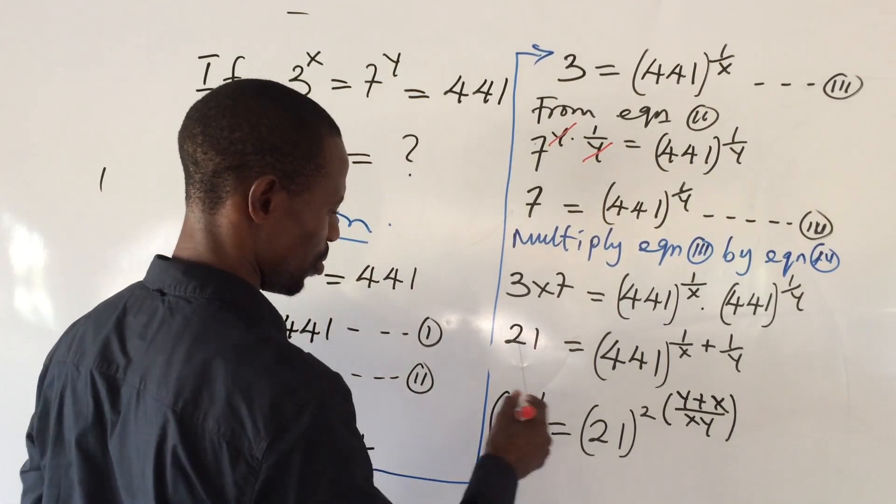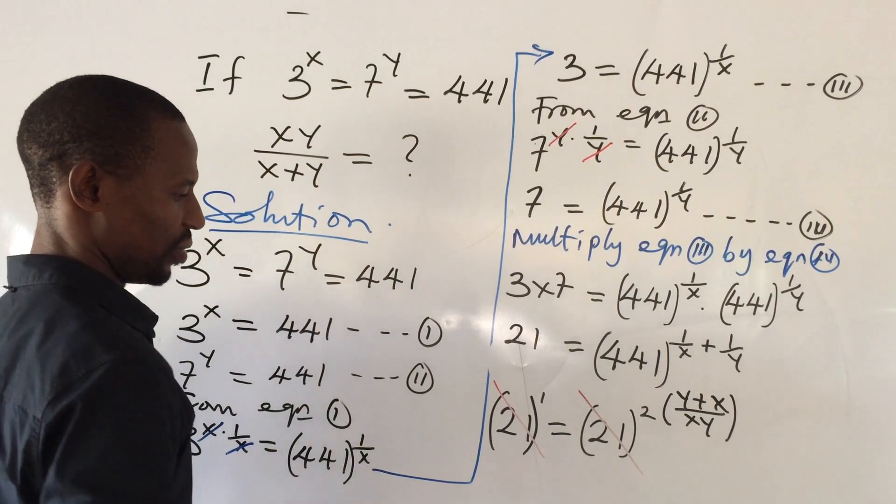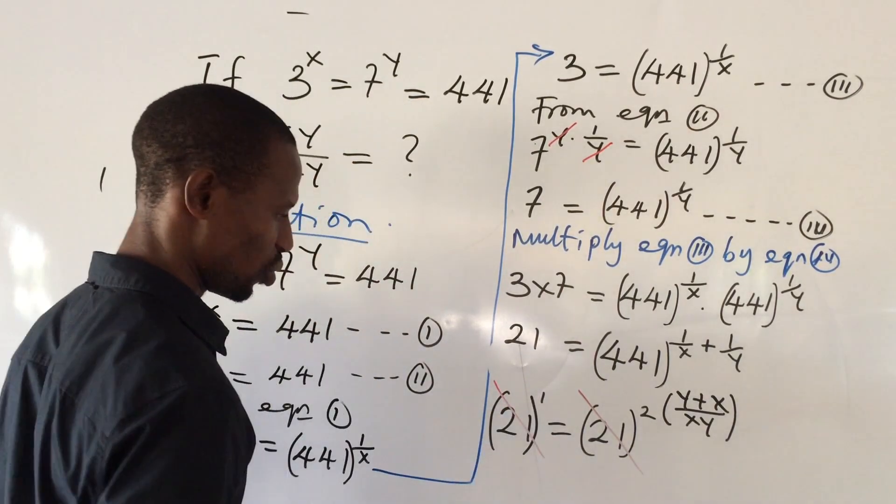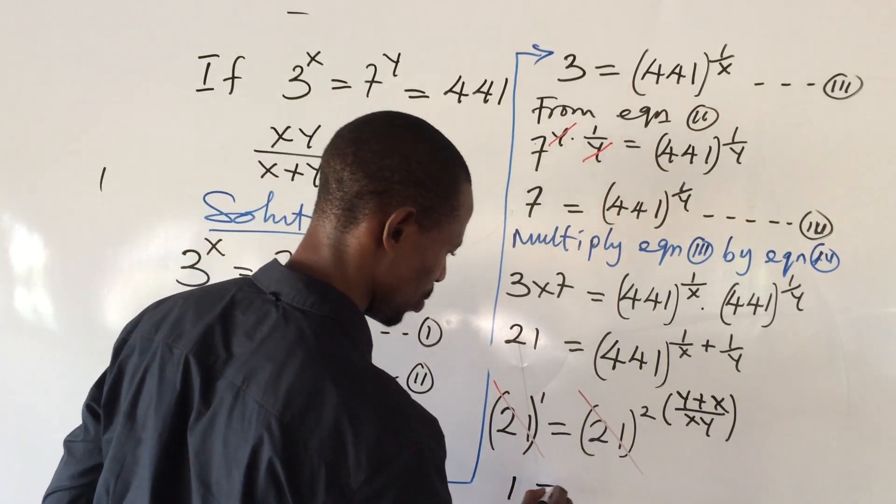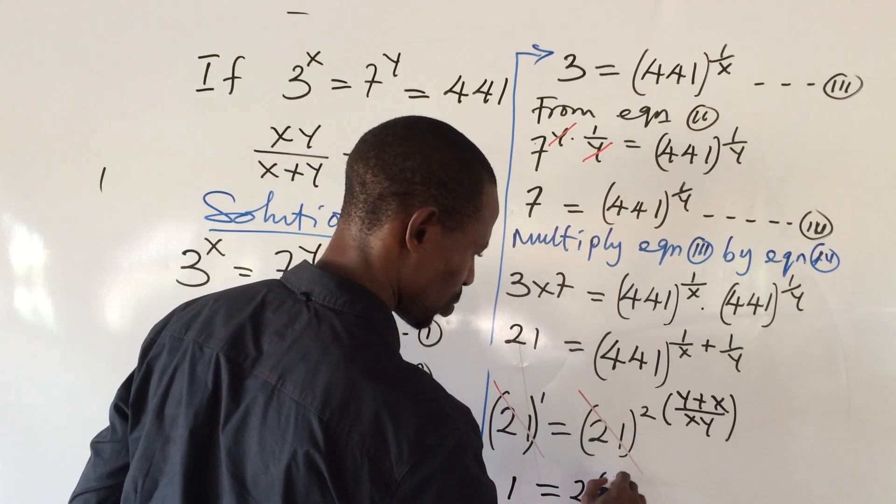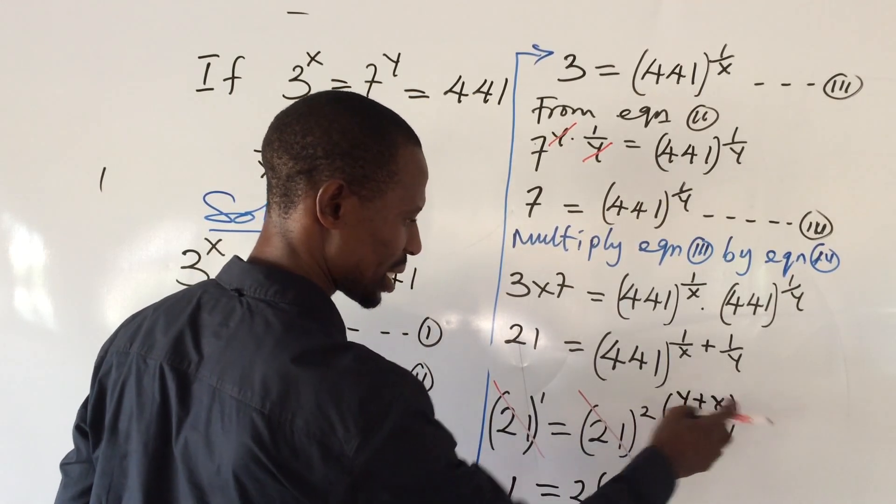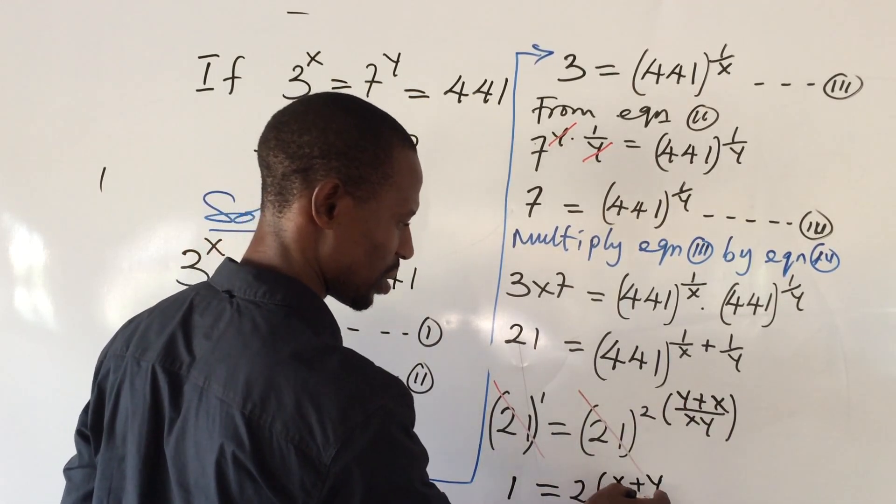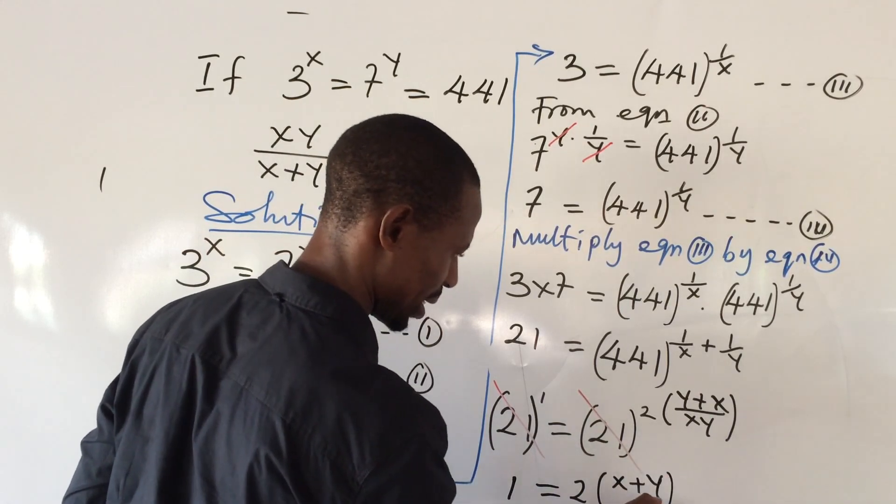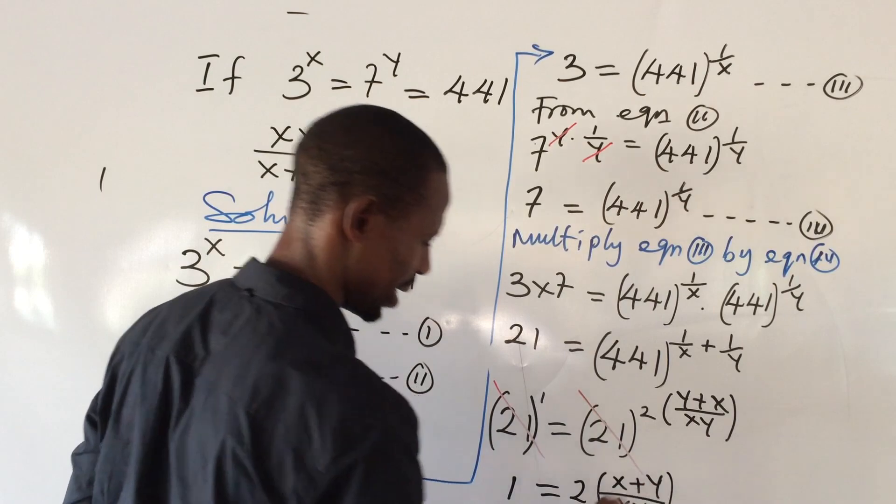In other words, this very 1, we strike out this 1. If we strike out this, we are now left with 1 equal to your 2 into your xy, because y plus x can equally be expressed as x plus y, close bracket, all over your xy.